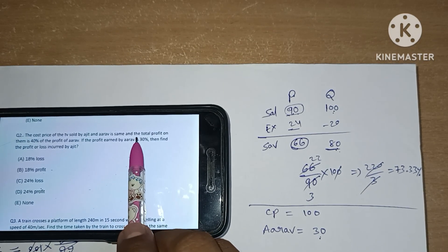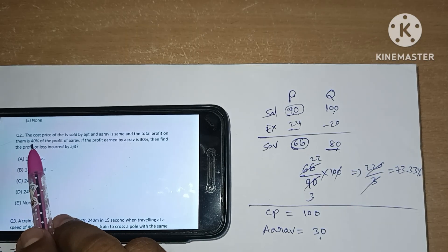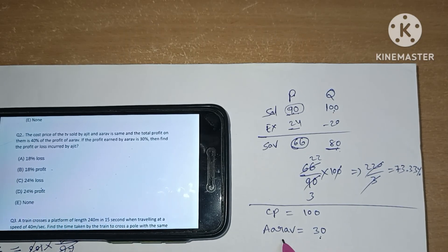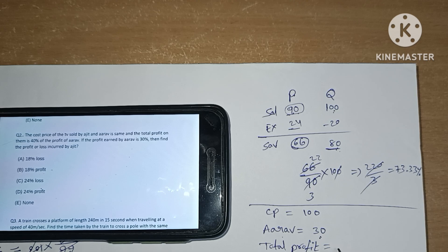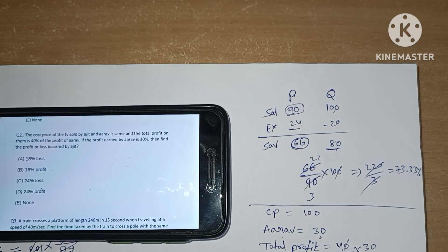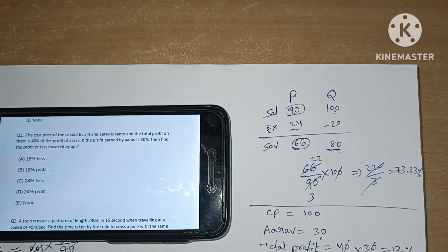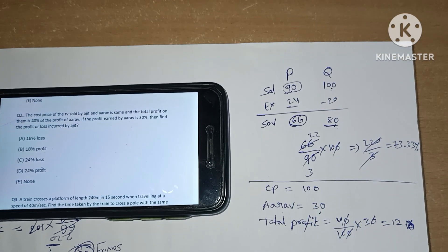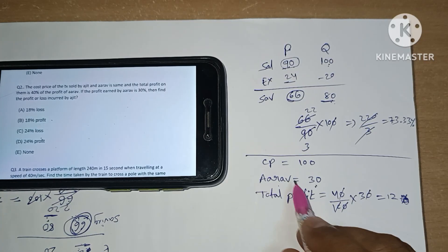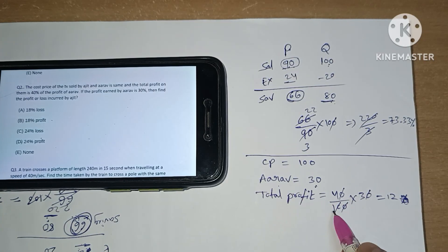The total profit on them is 40% of the profit of Arav. Profit of Arav is 30, so total profit is 40% of 30, which is 40 divided by 100 into 30, giving us 12. So total profit is 12.